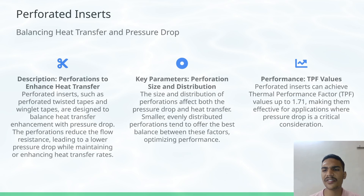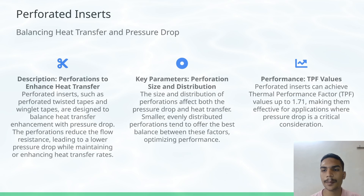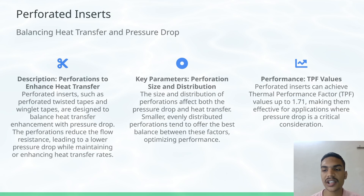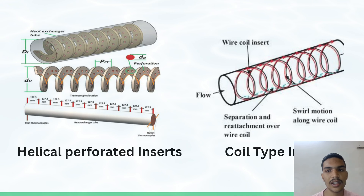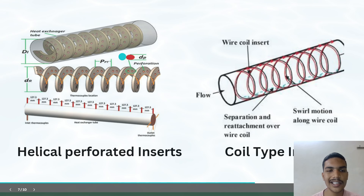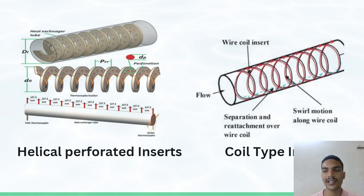Smaller but evenly distributed perforations tend to offer the best balance between these factors, optimizing performance. The TPF is generally up to 1.71, making them effective for applications where pressure drop is a critical consideration. You can see that a helical coil combined with perforations forms the coil-type insert discussed earlier.